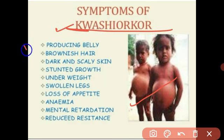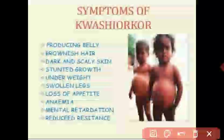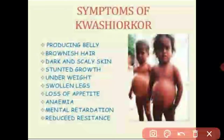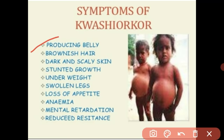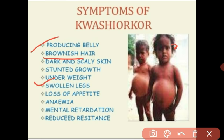The symptoms of Kwashiorkor include a protruding belly — the belly protrudes outward. The hair becomes brownish. The skin becomes dark and scaly, with scale-like structures appearing on the skin. There is stunted growth because if the child is not getting the proper amount of protein, the child does not grow properly. The child is also underweight.